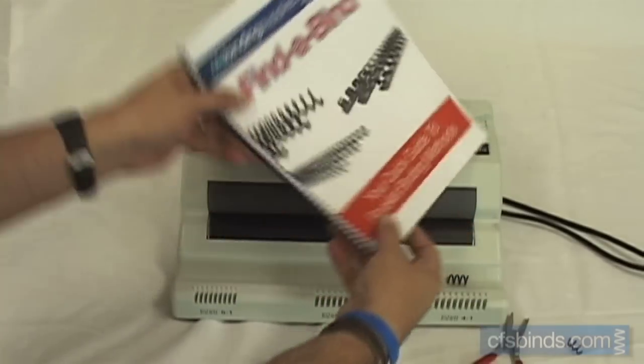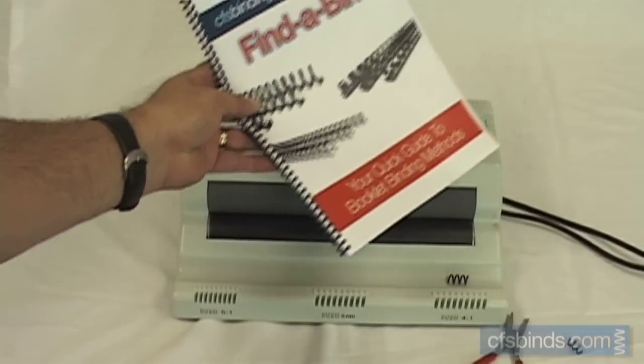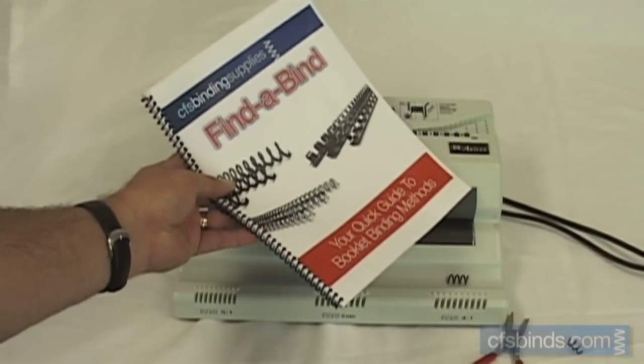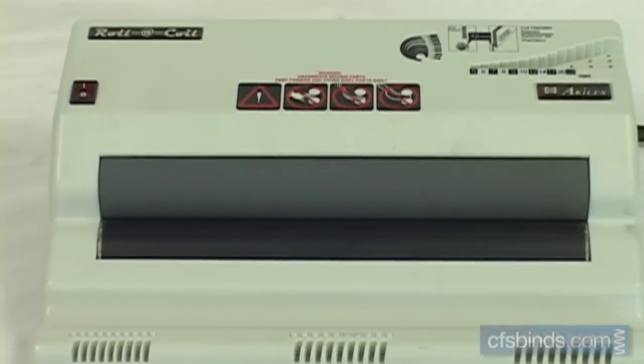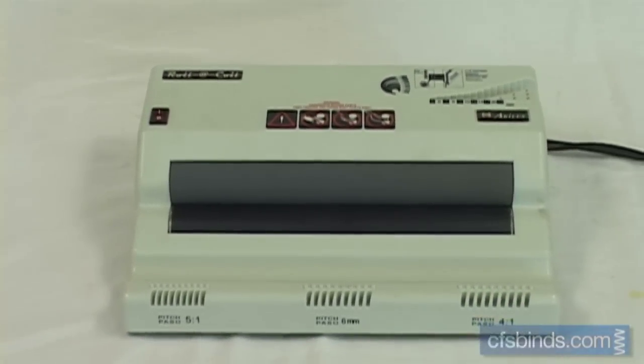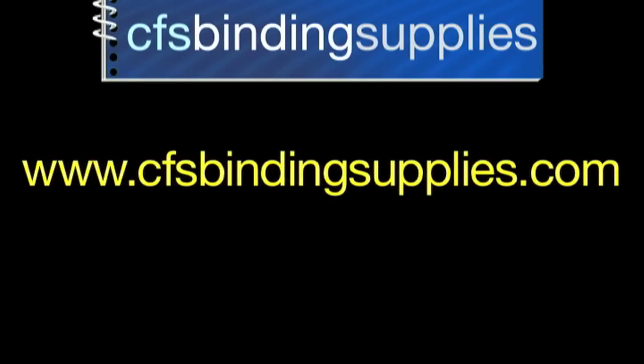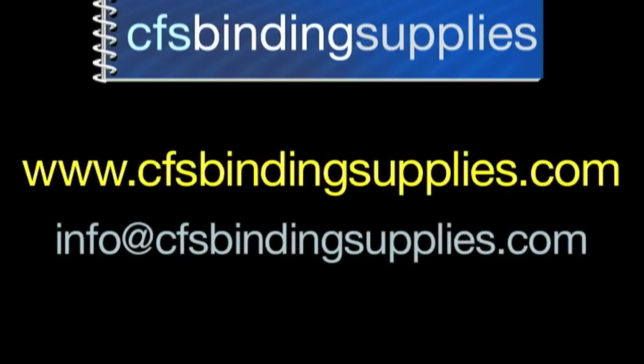So that shows you just how fast and easy it is to use the Roll-A-Coil electric coil inserter for finishing your plastic coil bound books. Thanks so much for watching this demonstration. Of course, if you have any questions, you can visit www.cfsbindingsupplies.com or email us at info@cfsbindingsupplies.com.